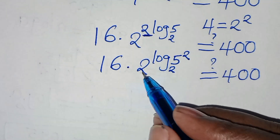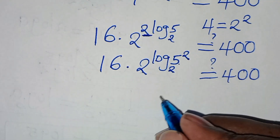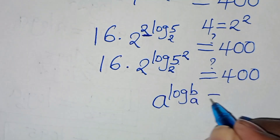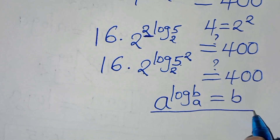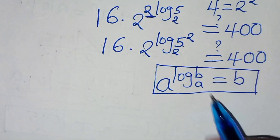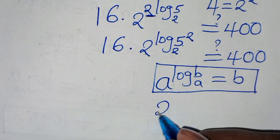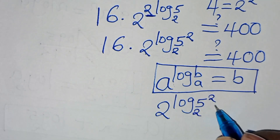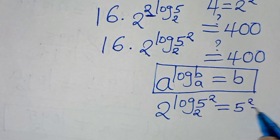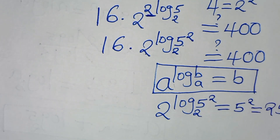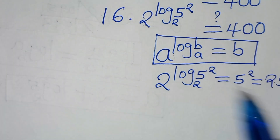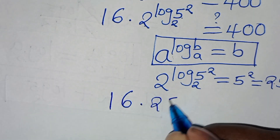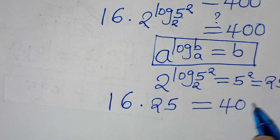We have 16 times 2^(2·log₂5). Now, 2^(log₂5) is in the form a^(log_a(b)), which equals b. Applying this logarithm property, 2^(log₂5) equals 5, so 2^(2·log₂5) equals 5 squared, which is 25. Substituting, we have 16 times 25, which should give us 400.